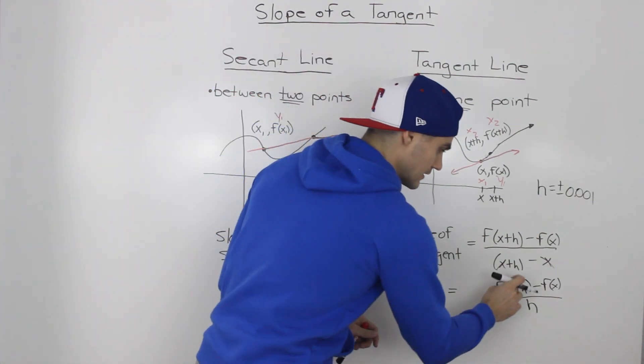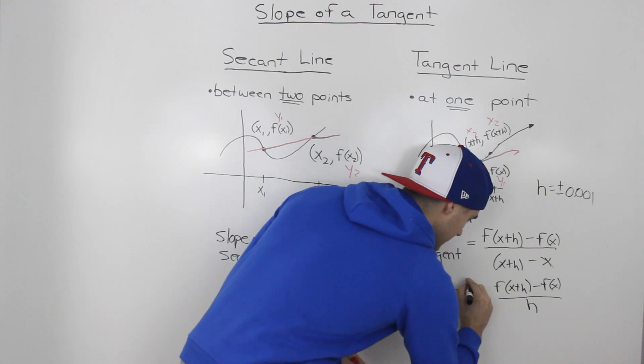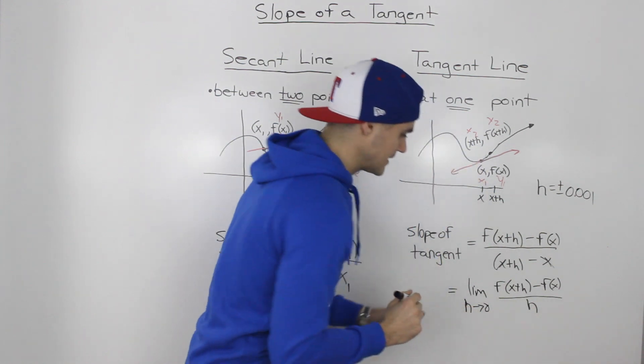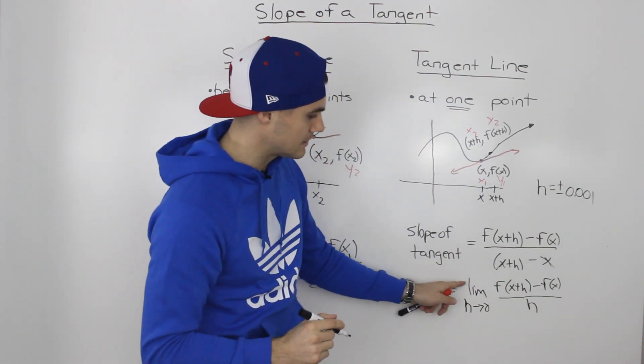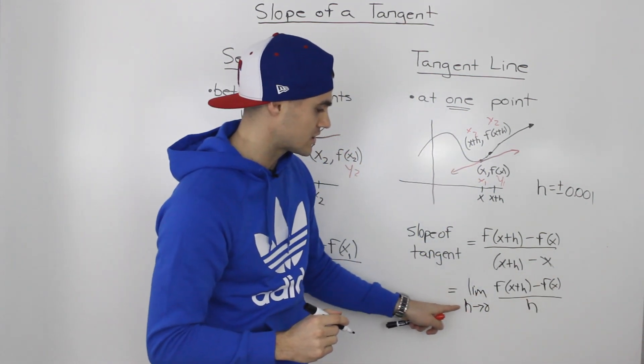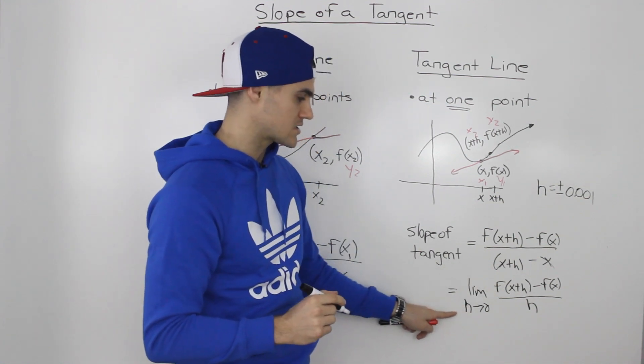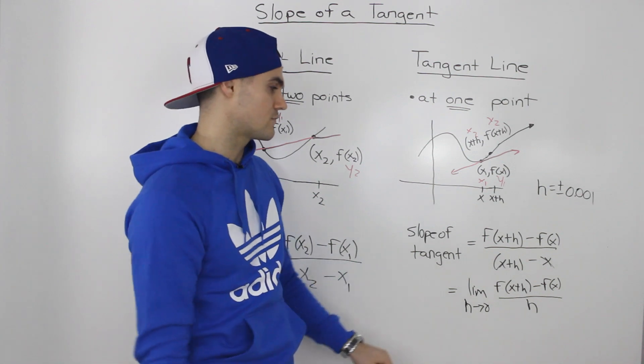So we're going to find the value of this expression as h goes to zero. So basically, this notation means the limit of this expression as h approaches zero. Now limits we'll go over in more detail in future videos.